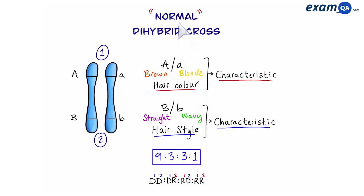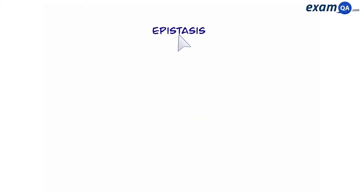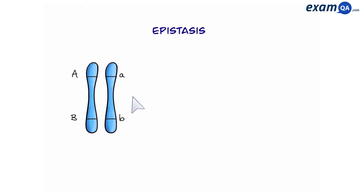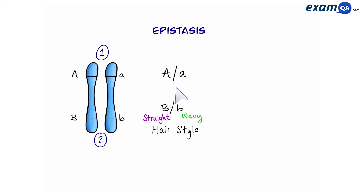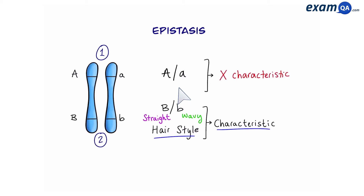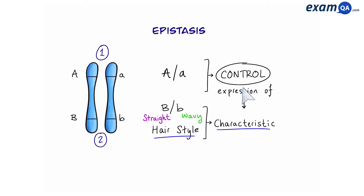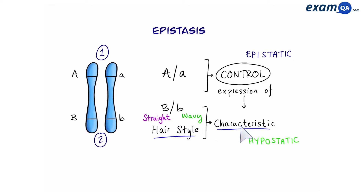Because what we're about to look at does not follow this normal pattern. So in epistasis, again we're going to have two genes — gene A and gene B. Gene B codes for a characteristic, in this case hairstyle. However, gene A does not code for a characteristic. Instead, gene A is responsible for controlling the expression of gene B. So gene A, or the controlling gene, is also known as the epistatic gene. And gene B, the one that is being controlled, is known as the hypostatic gene.